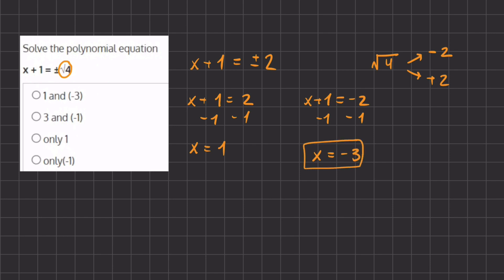So our x can have two values. It can have x equals positive 1 and x equals negative 3, and that corresponds exactly with answer A, which is going to be our final answer.